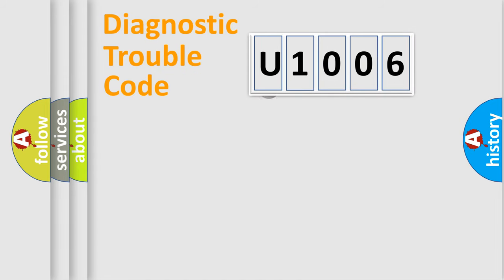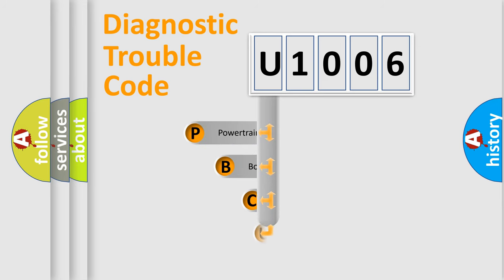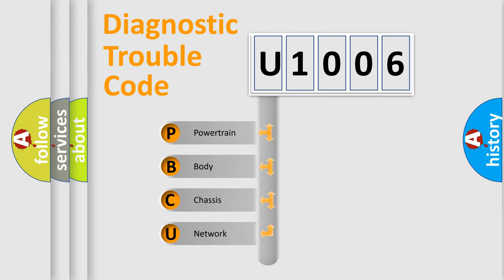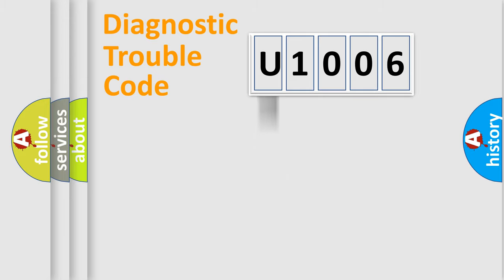First, let's look at the history of diagnostic fault code composition according to the OBD2 protocol, which is unified for all automakers since 2000. We divide the electric system of the automobile into four basic units: Powertrain, Body, Chassis, and Network. This distribution is defined in the first character of the code.